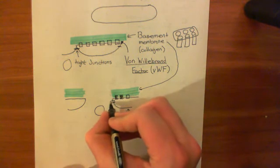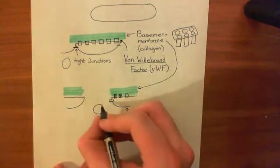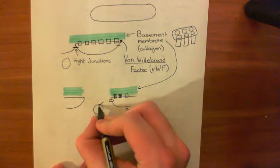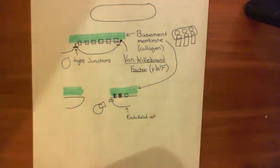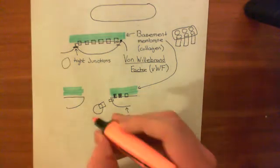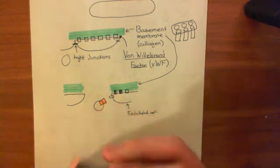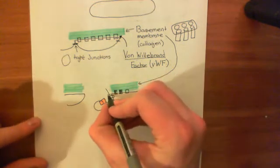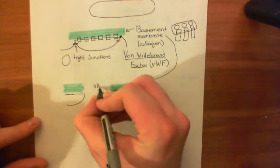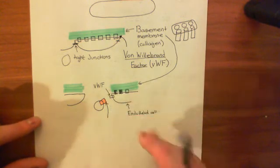So let's say we have some von Willebrand factor here. Basically, the platelets have in their membrane a receptor which can bind to von Willebrand factor. This orange box is a protein which can bind to our von Willebrand factor here. So this is our von Willebrand factor, and this protein has a rather fantastic name.